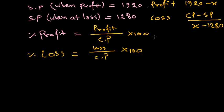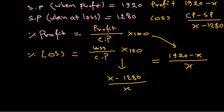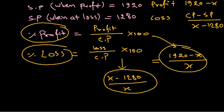So in the first case, percentage profit is (1920 minus X) divided by X. In the second case, percentage loss is (X minus 1280) divided by X. These give us the percentage profit and percentage loss respectively.